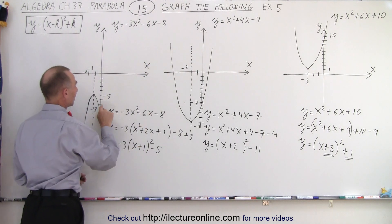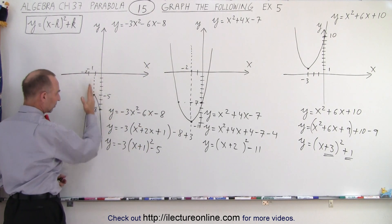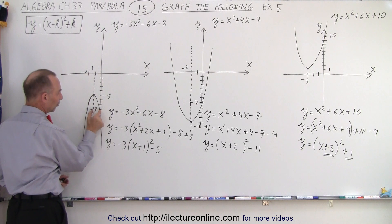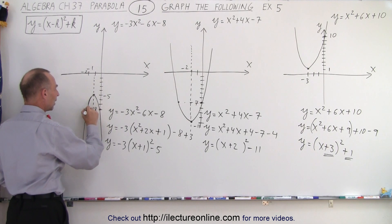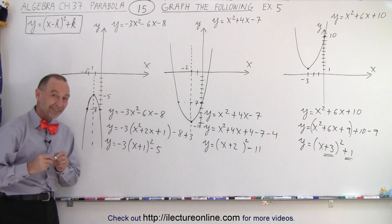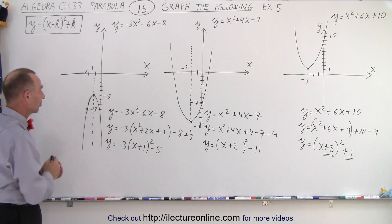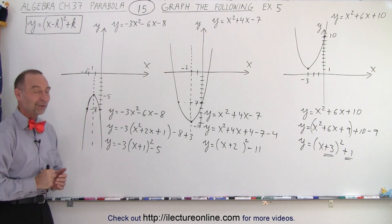We also found the y-intercept at negative 8. If we draw the axis of symmetry from negative 1 to 0, that's 1. We can go to the left 1. That means we can draw another point right there. And we know that the parabola will go to that point because of the perfect symmetry about the axis of symmetry. And that is how it's done.